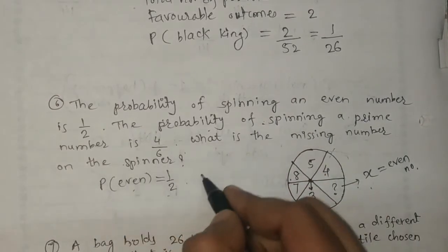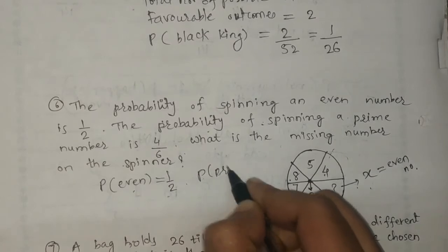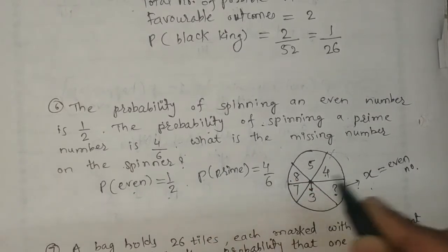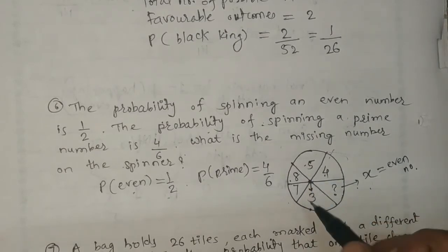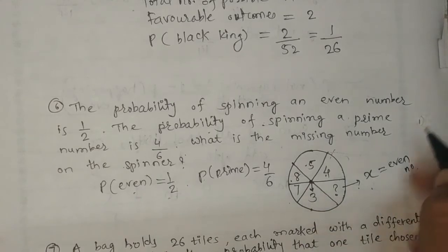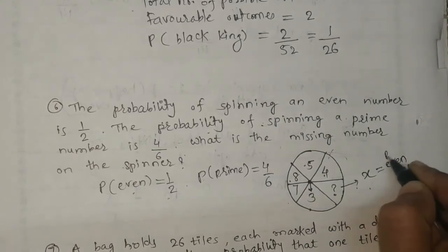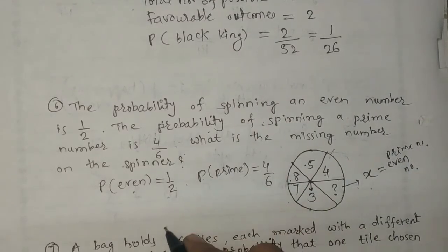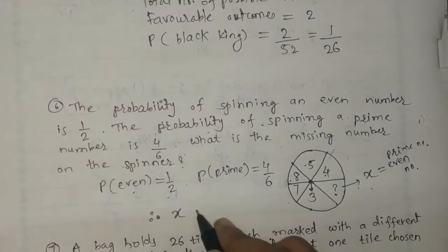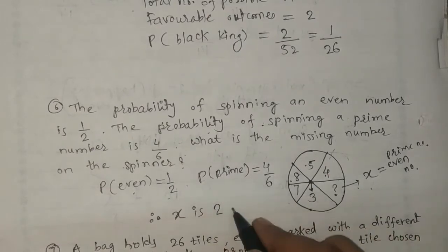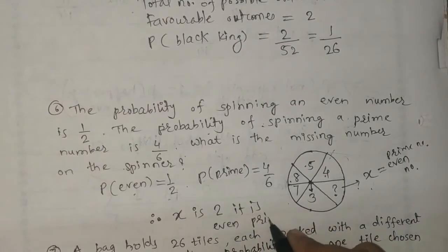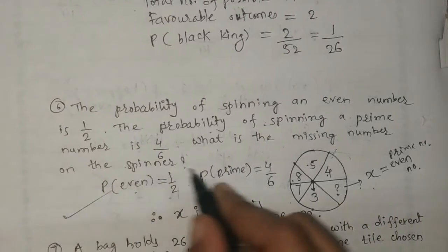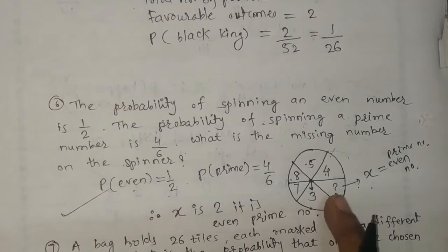The probability of spinning a prime number is 4 by 6, meaning there are 4 prime numbers. We can see 3, 7, and 5 are prime numbers already. So X must be both even and prime. Therefore X is 2, because 2 is the only even prime number. So the missing number on the spinner is 2.